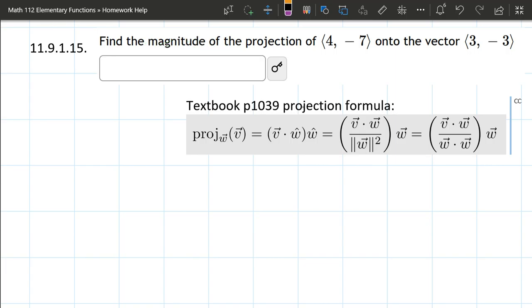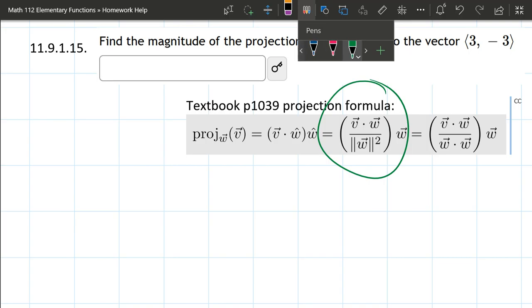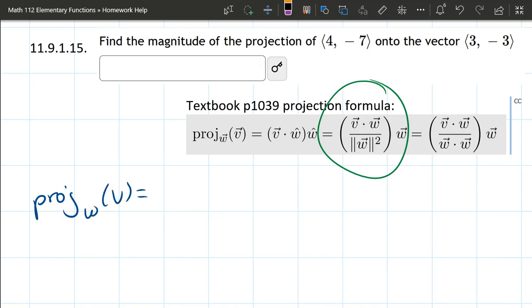But what they want in this question is the magnitude of the projection. This is my favorite version of the formula, so we're going to be using that one right here. Let's go ahead and rewrite it. Projection w onto v is v dot w divided by magnitude w squared times w.